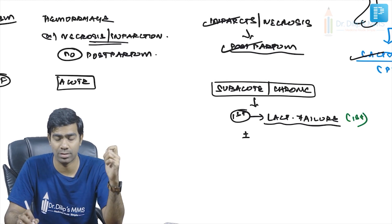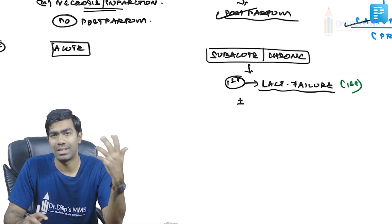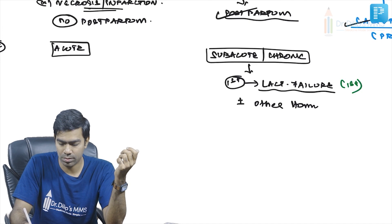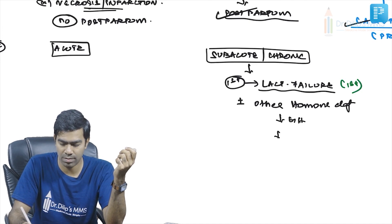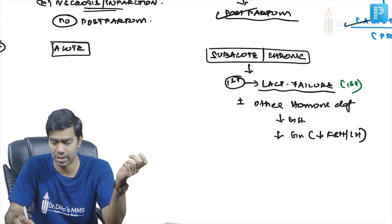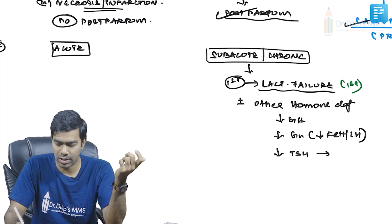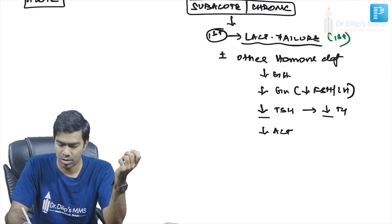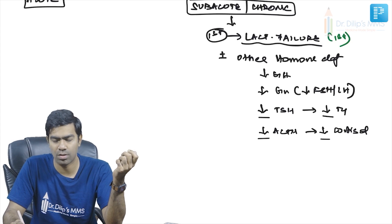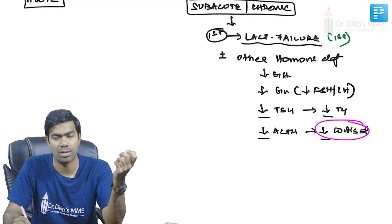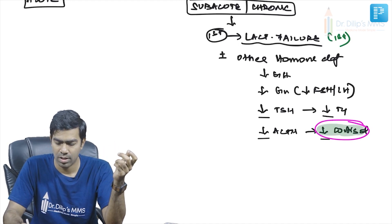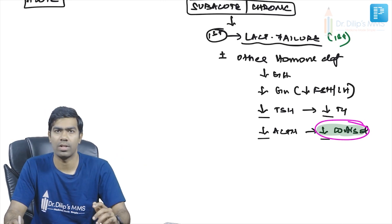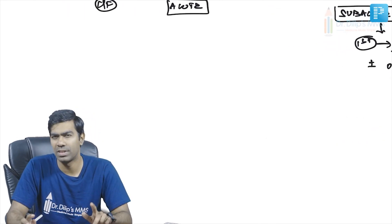Sheehan syndrome patients may also have other hormone deficiencies: low growth hormone, low gonadotropins (FSH and LH) causing amenorrhea, low TSH causing low T4 leading to central hypothyroidism, and low ACTH causing low cortisol — resulting in secondary adrenal insufficiency. These patients are prone to hypotension and shock during stressful states because cortisol is critical during stress.